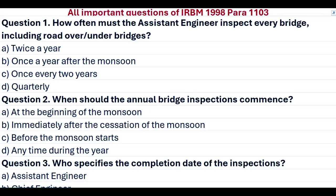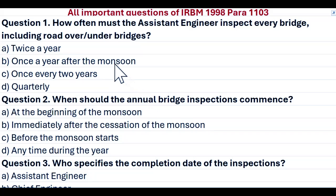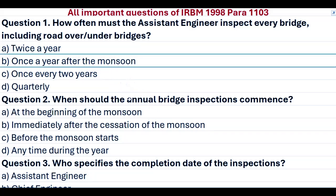Question 1. How often must the assistant engineer inspect every bridge, including road over and under bridges? A. Twice a year. B. Once a year after the monsoon. C. Once every two years. D. Quarterly. Answer B. Once a year after the monsoon.